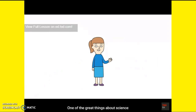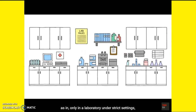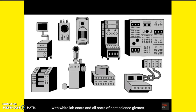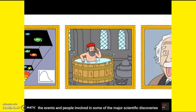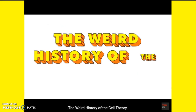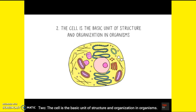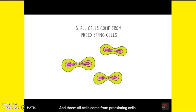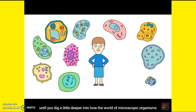One of the great things about science is that when scientists make a discovery, it's not always in a prescribed manner — as in only in a laboratory under strict settings with white lab coats and neat science gizmos that go beep. In reality, the events and people involved in some of the major scientific discoveries are as weird and varied as they get. My case in point: the weird history of the cell theory. There are three parts to the cell theory. One: all organisms are composed of one or more cells. Two: the cell is the basic unit of structure, organization, and function in organisms. Three: all cells come from pre-existing cells. This all sounds incredibly boring, until you dig a little deeper into how the world of microscopic organisms and this theory came to be.